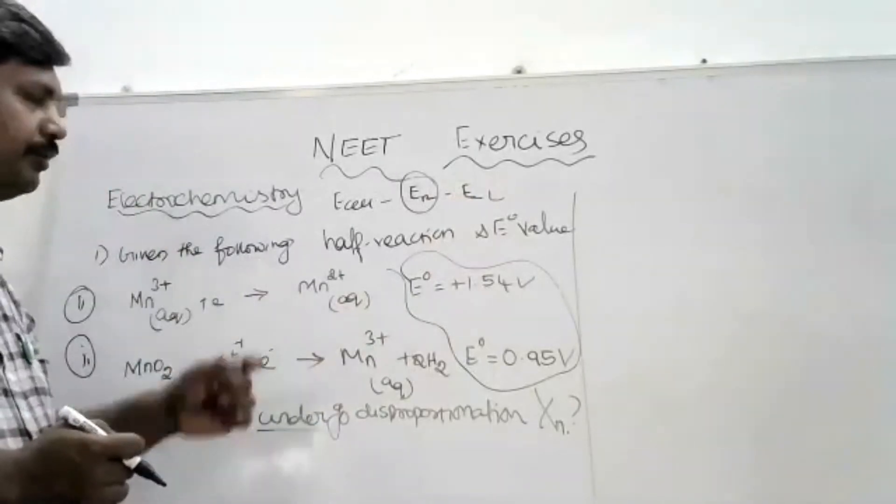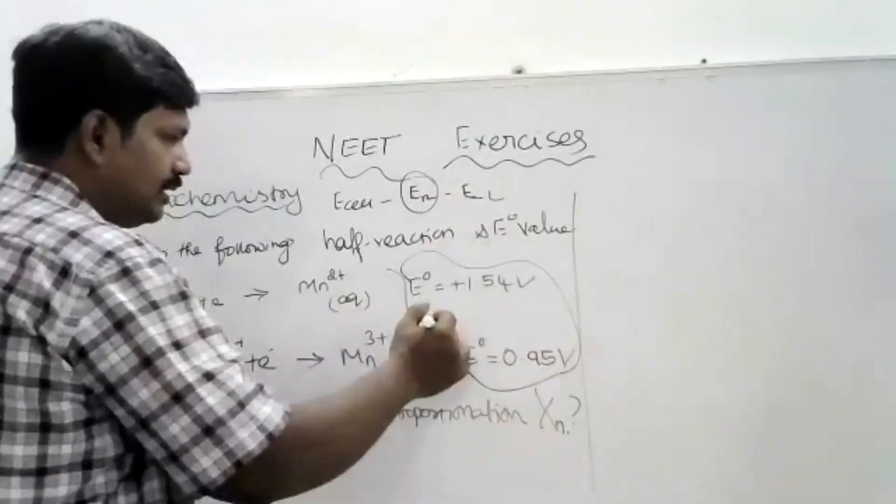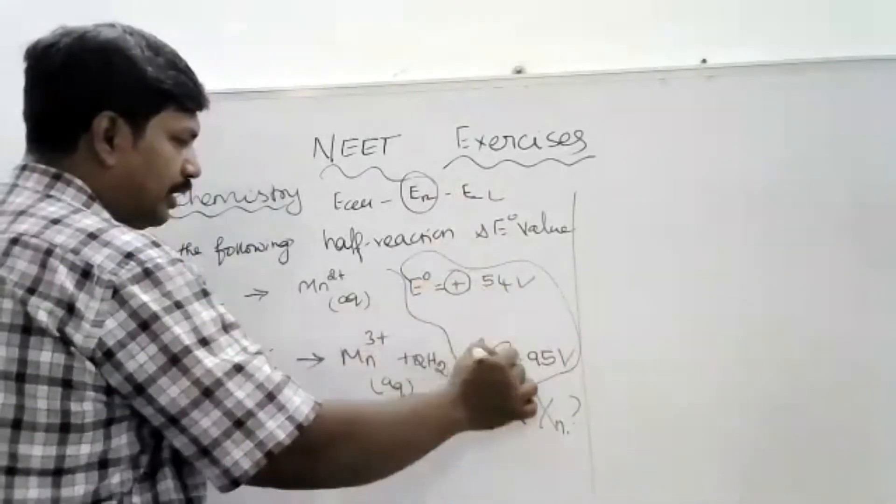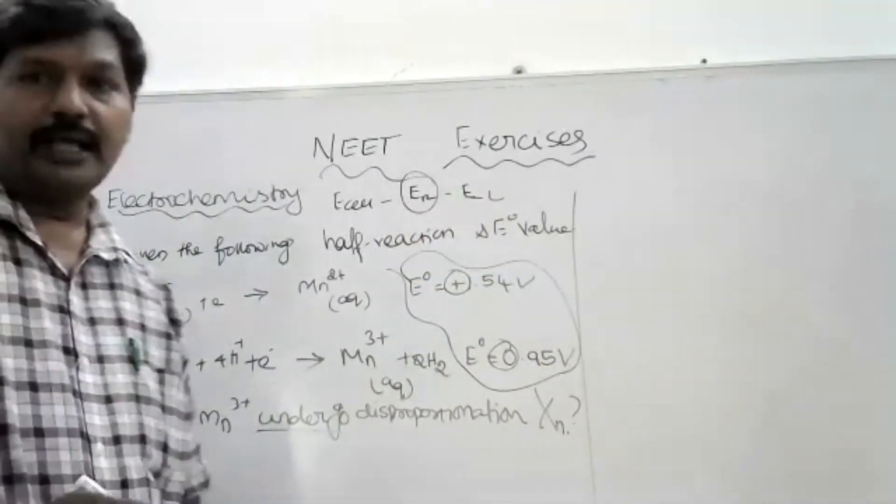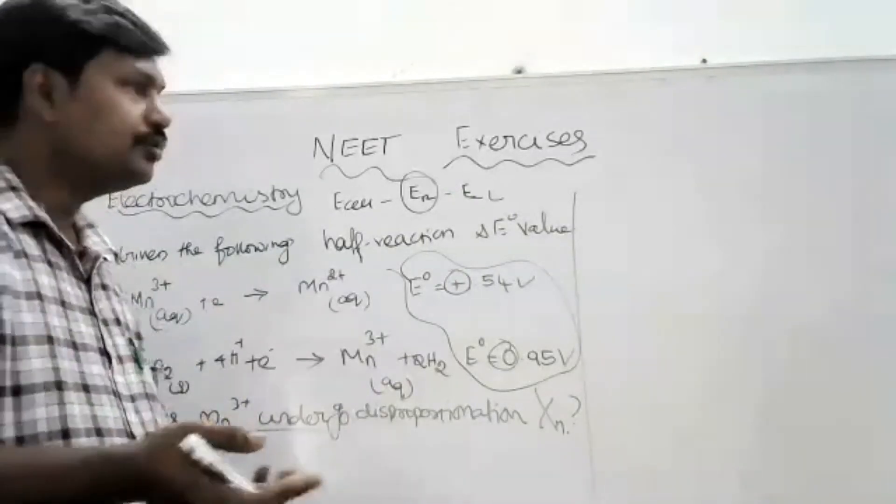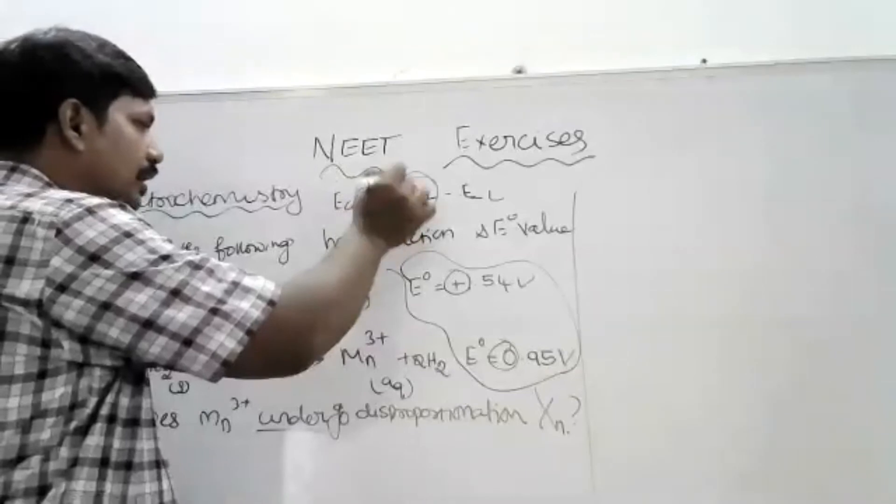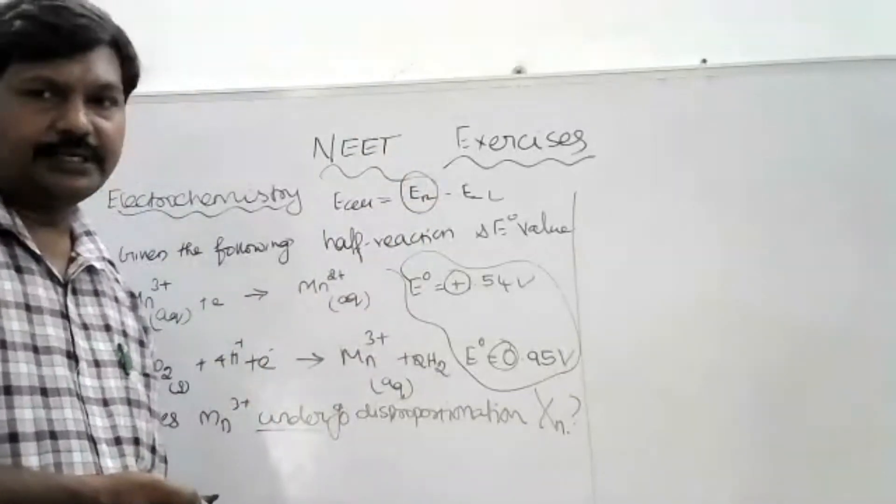So, two points we can understand. One is, by calculating these things, it is called the cathode potential. The cathode potential is positive or not, so that will determine if that reactant will undergo disproportionation reaction.